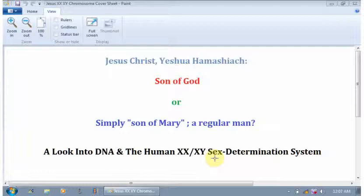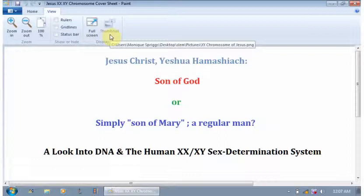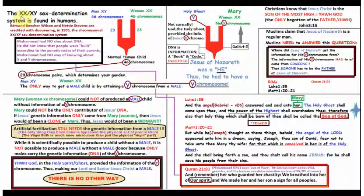Now I'm going to try to make this very simple because that's how I like things, simple and easy. So let's look at this chart that I made. The XX/XY Sex Determination System is found in humans. Edmund Beecher Wilson and Nettie Stevens are credited with discovering the chromosomal XX/XY Sex Determination System, and they discovered it in 1905. So that was barely 100 years ago.